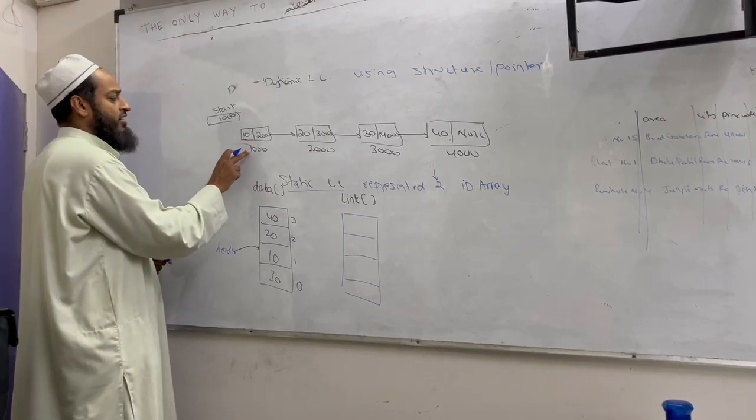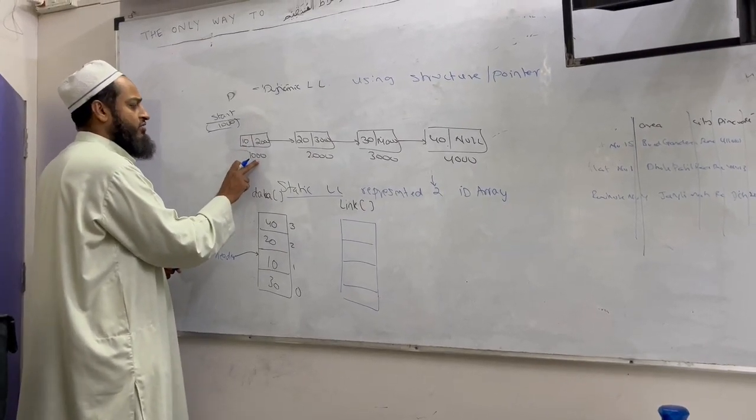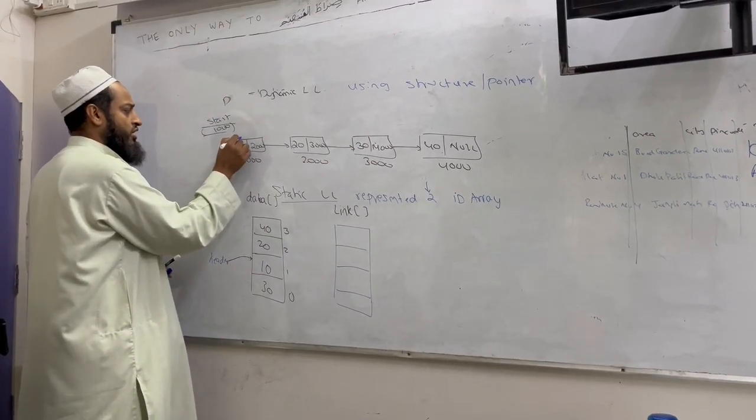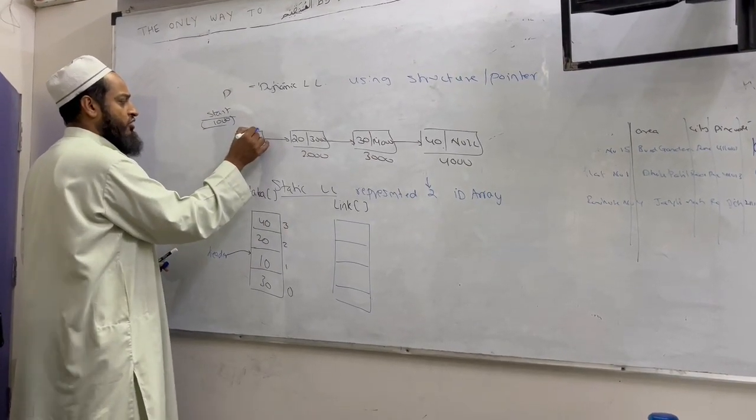So I have addresses 1000, 2000, 3000, 4000. I have four nodes. So this is the data of the node, this is the next of the node.